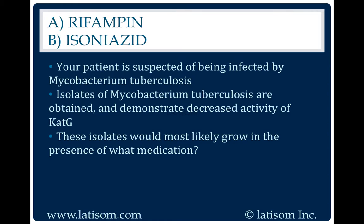Isoniazid is a prodrug that must be activated by the bacterial catalase-peroxidase enzyme. KatG is the name of the catalase-peroxidase enzyme in Mycobacterium tuberculosis. Mutations or non-expression of KatG would result in the active form of the drug not being formed from Isoniazid.